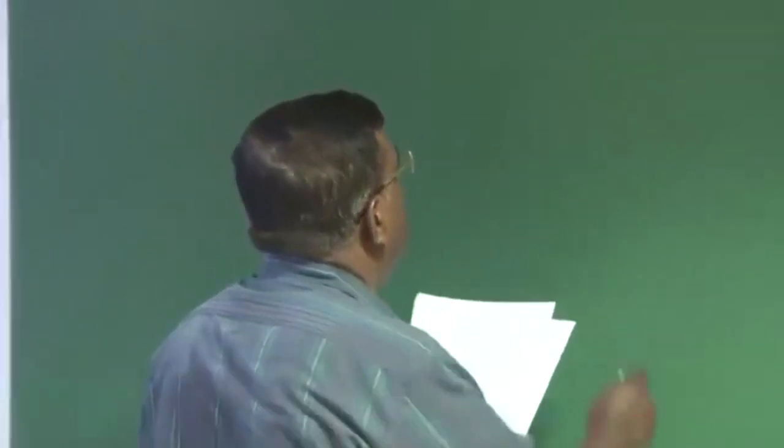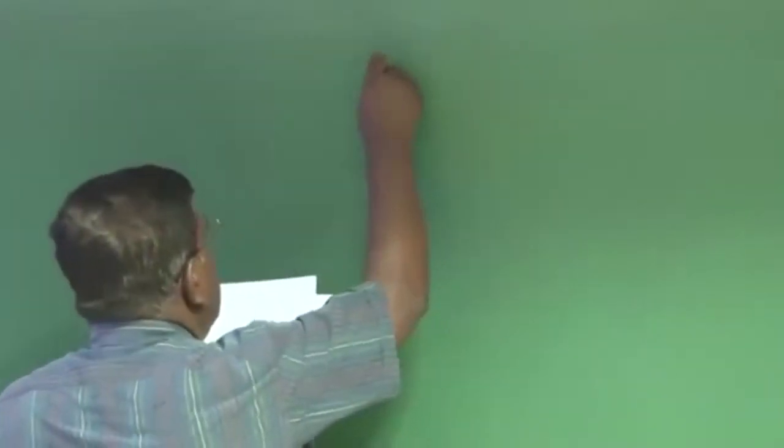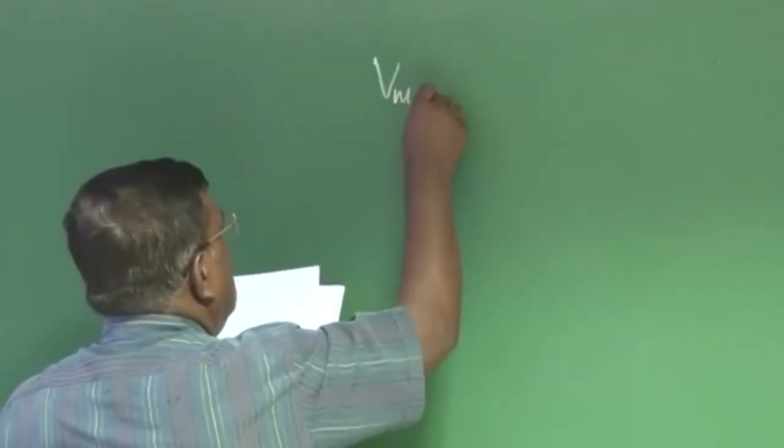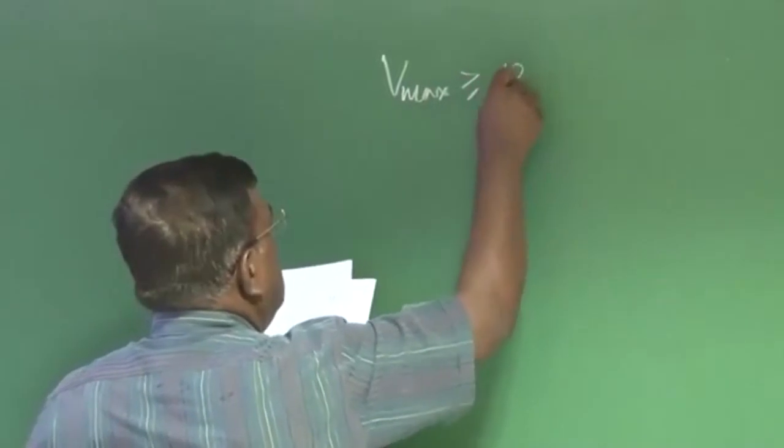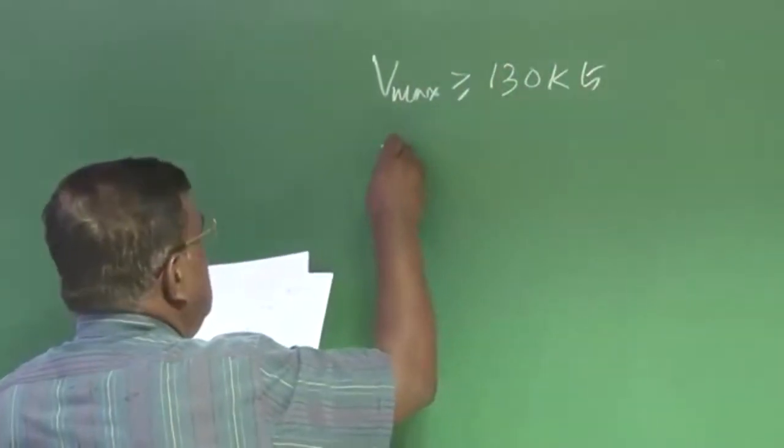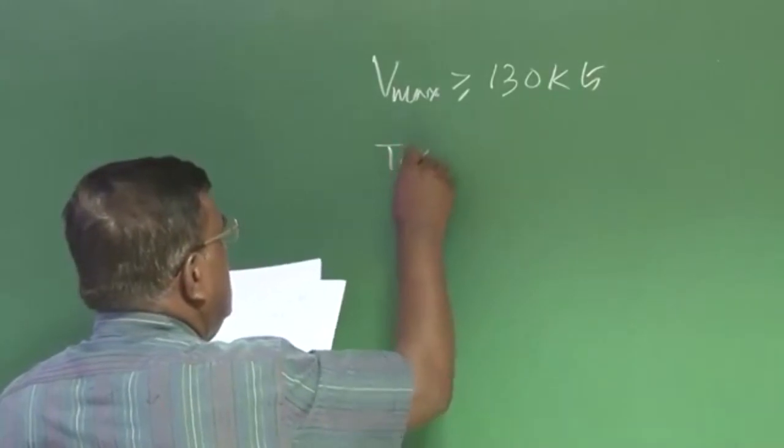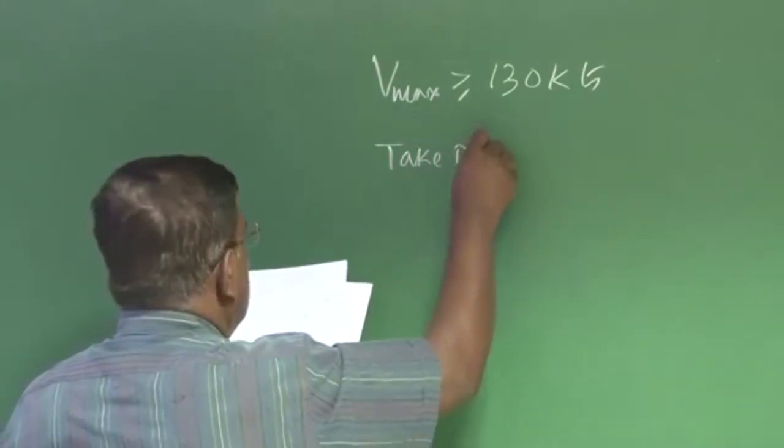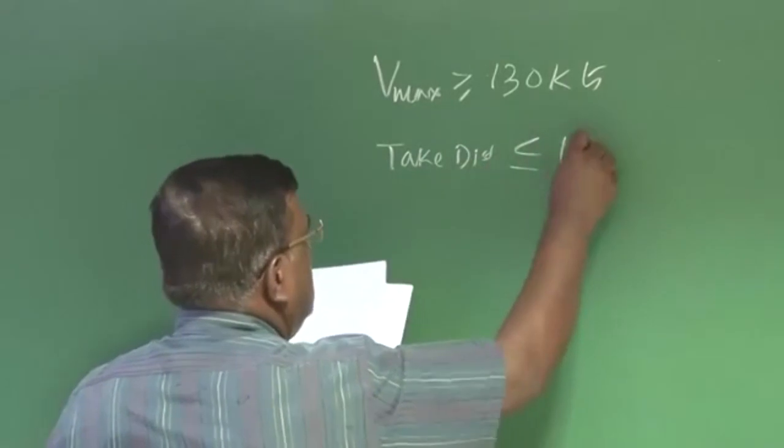If you recall, mission requirements were V max greater than or equal to 130 knots, then takeoff distance less than or equal to 1000 feet.